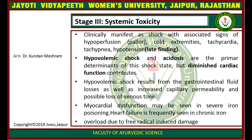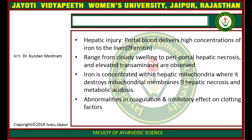Mitochondrial dysfunction may be seen in severe iron poisoning. Heart failure is frequently seen in chronic iron poisoning due to free iron-induced damage. Regarding hepatic injury, portal blood delivers high concentrations of iron to the liver. Changes range from cloudy swelling to periportal hepatic necrosis, and elevated transaminases are observed. Iron concentrated within hepatic mitochondria destroys mitochondrial membranes. Abnormalities in coagulation and inhibitory effects on clotting factors are also seen.